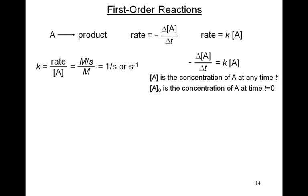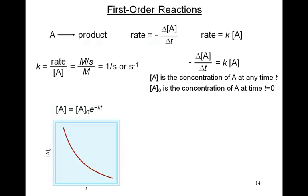We define A₀ as the concentration of A at time T equals 0. If we plot the concentration of A at some time T versus T, we get a curve — an exponential function. Exponential functions are hard to work with. It would be a lot easier if we can turn this into a straight line, a linear relationship.